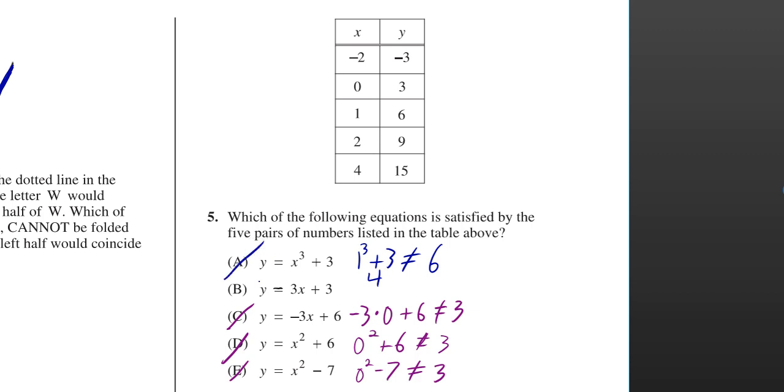So by process of elimination, we know the answer is b. In fact, you can double-check both 0 and 1 there. Those both work. 3 times 2 plus 3 is 9. And you can keep going, but we've already eliminated the other ones.